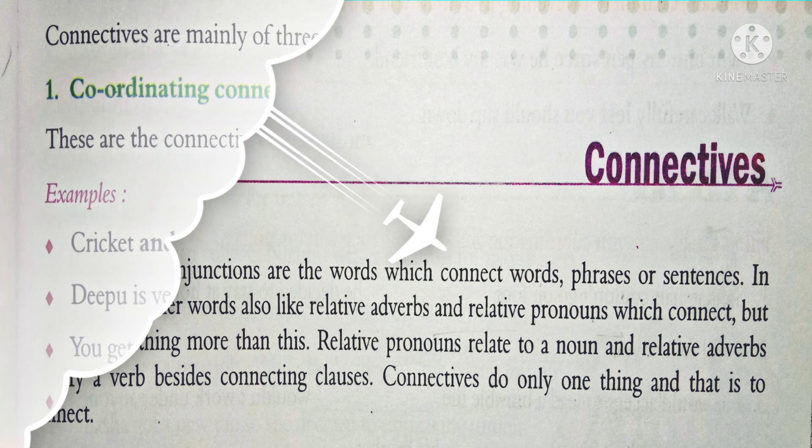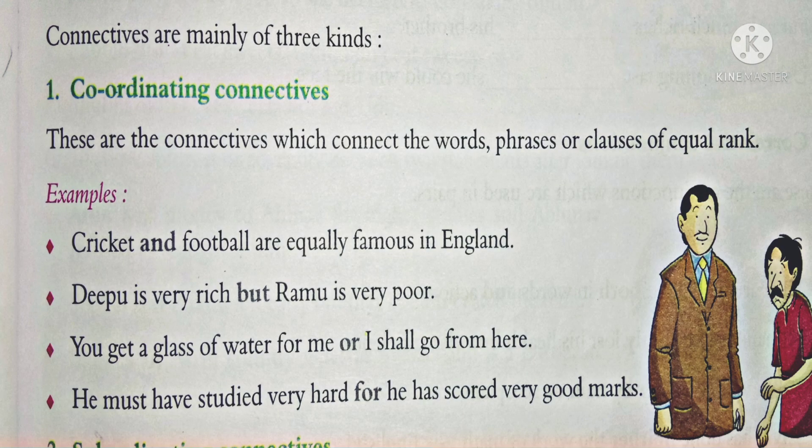Connectives are mainly of three kinds. Now we are going to learn all three kinds of connectives one by one. Number one: coordinating connectives.